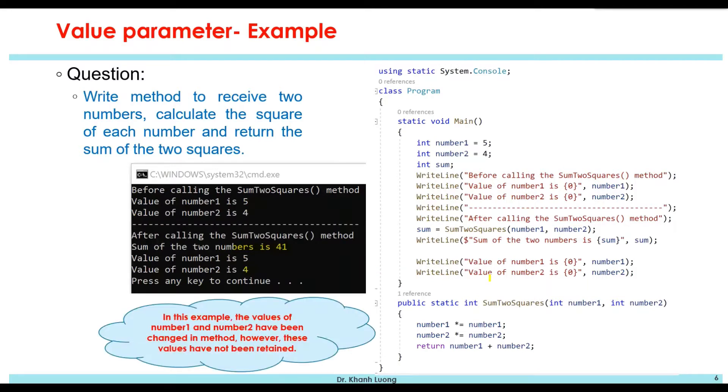So in this example, the values of number1 and number2 have been changed inside the method. However, these values have not been retained. So that's the first type of parameter which is value parameter.